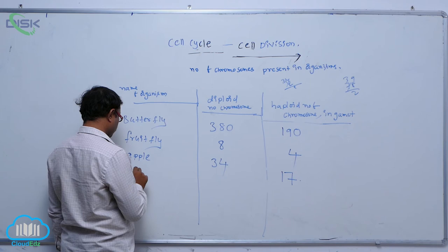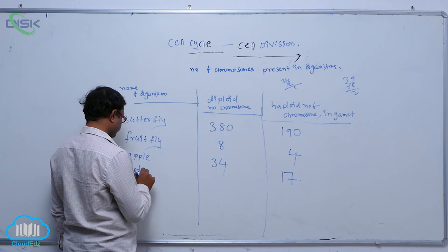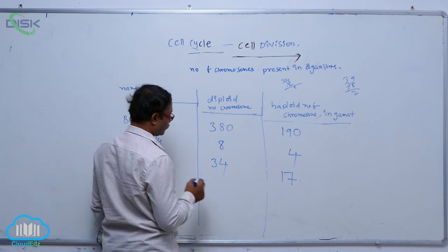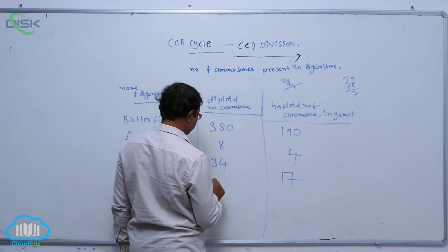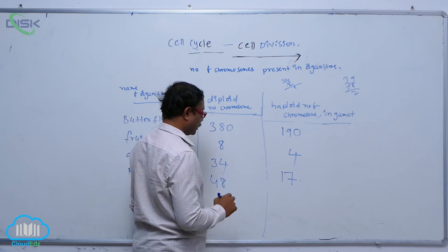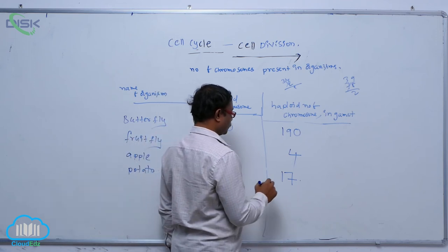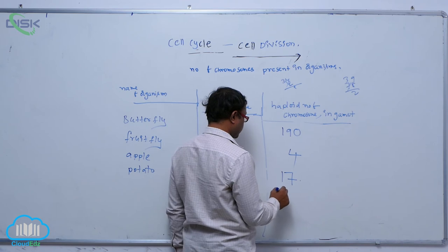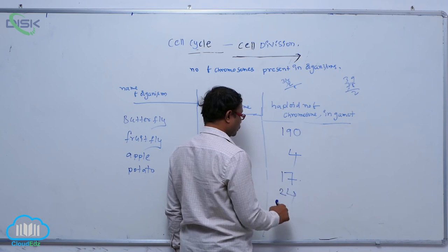In potato, the diploid number of chromosomes is 48, and the haploid number of chromosomes in each gamete is 24.